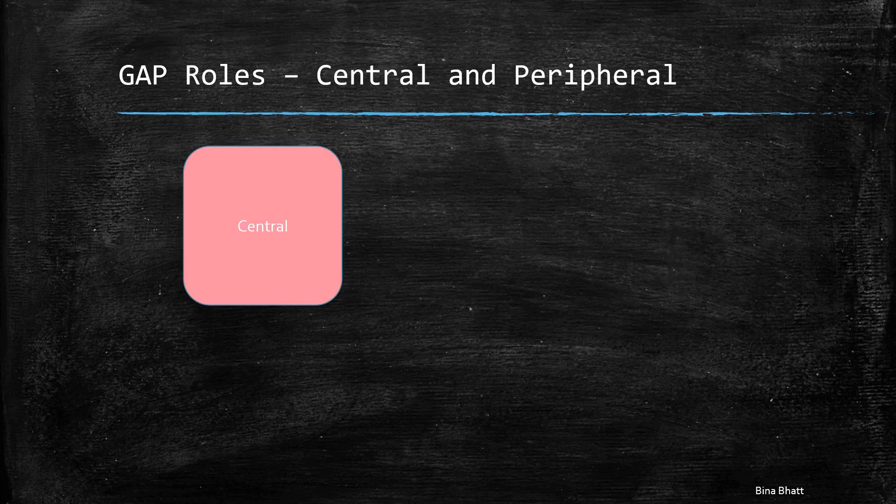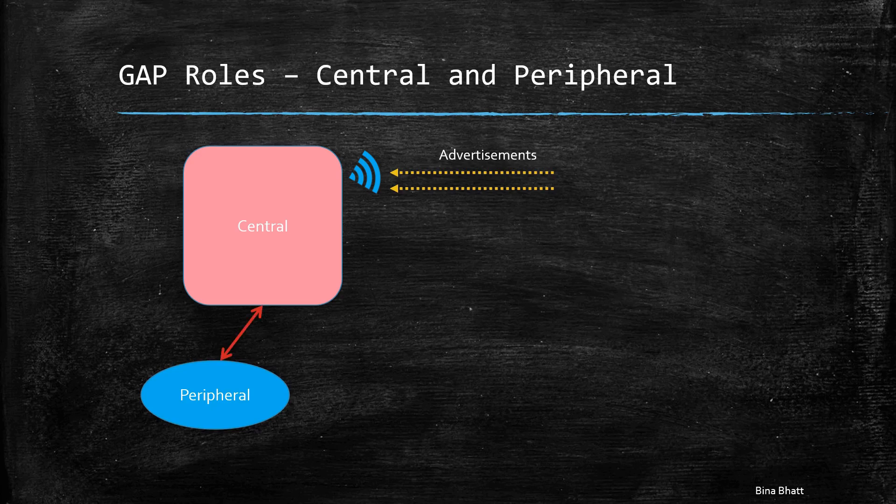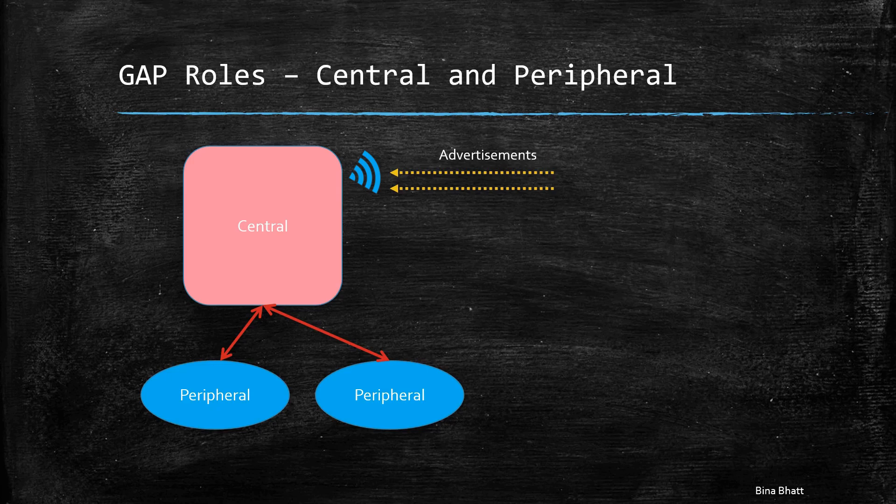When the device is in the central role, it scans or listens for advertisements. However, unlike an observer, it can interact with any station. It initiates the connection process and can include multiple peripherals or peers on the network.